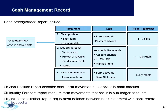The frequency of these reports depends on management's requirements. The cash position report describes all short-term movements in bank accounts. The liquidity forecast report provides medium-term movements in subledger accounts. The bank reconciliation report gives the adjustment between the bank statement and the book record — any differences need to be identified and resolved.